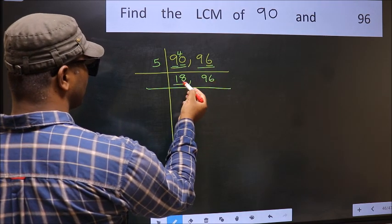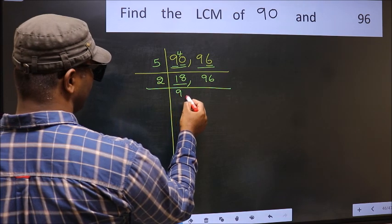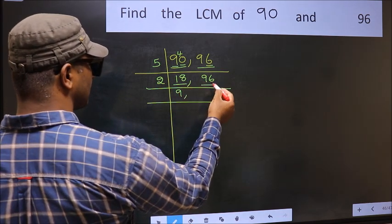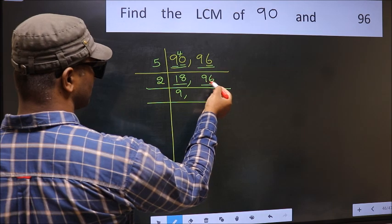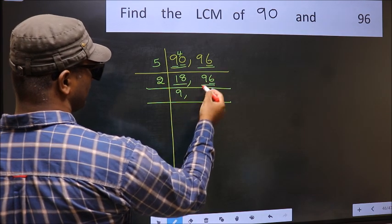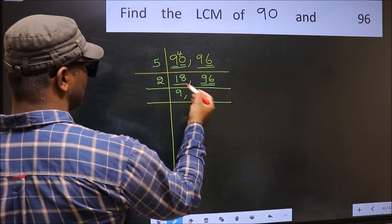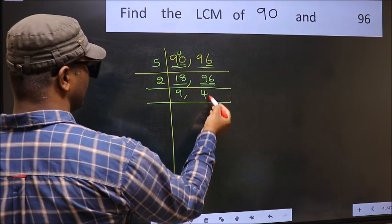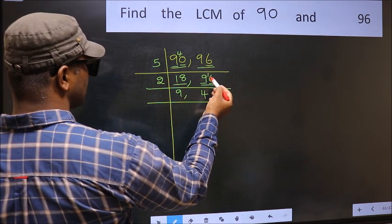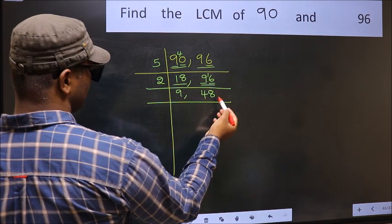Now we have 18. 18 is 2 nines, so 18. The other number 96 has last digit 6, which is even, so it is divisible by 2. The first digit is 9; a number close to 9 in the 2 table is 2 fours, which is 8. 9 minus 8 is 1, carried forward gives 16. We get 16 in the 2 table at 2 eights is 16.